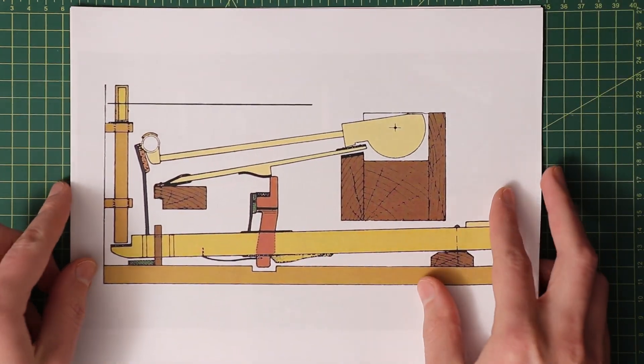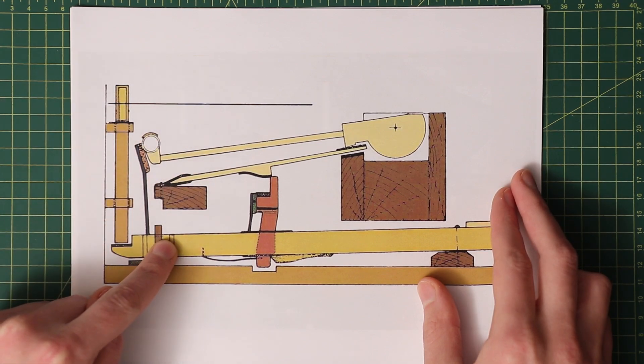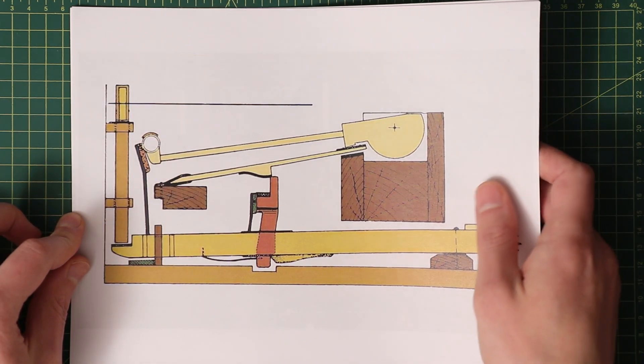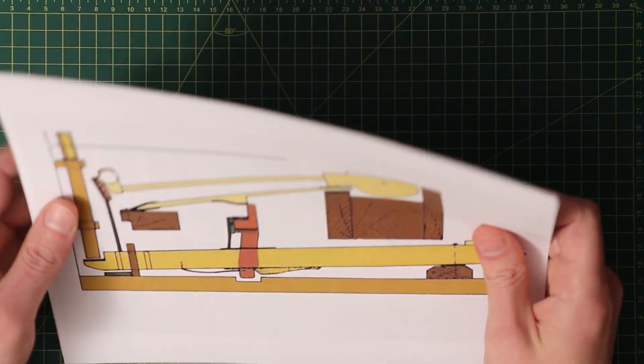Already at this point, a back check mechanism was added to catch the hammer as it fell down in order to prevent it from bouncing and hitting the strings again.